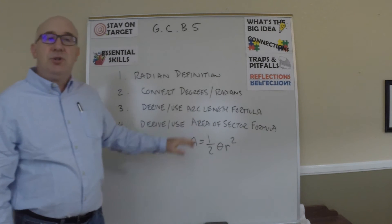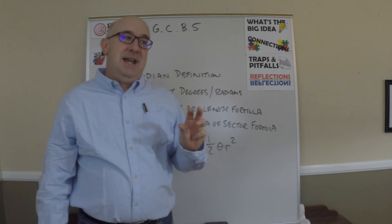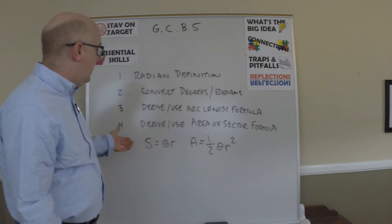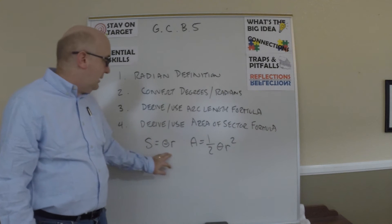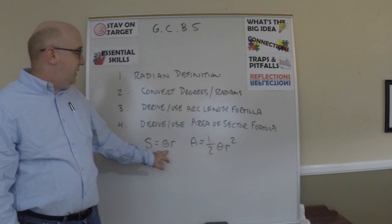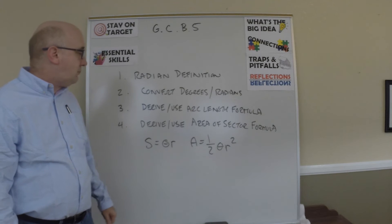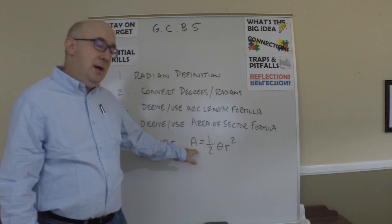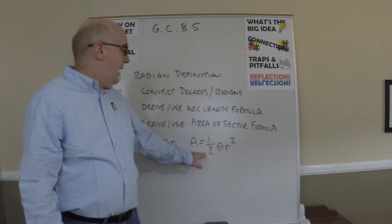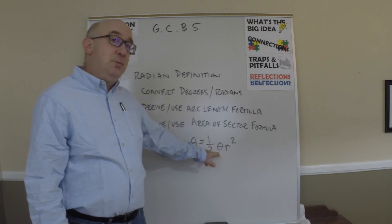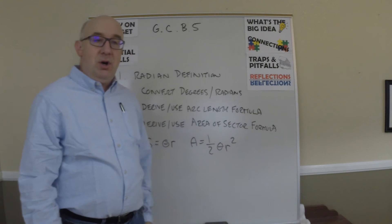We're also going to find out that there are two formulas that nicely get simplified if you are using radian measure. And so arc length becomes just the angle in radians times the radius. And the area of our sectors of our circle becomes one half the angle in radians times r squared.